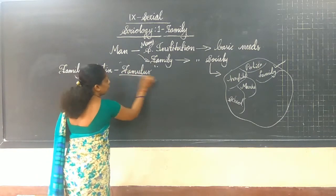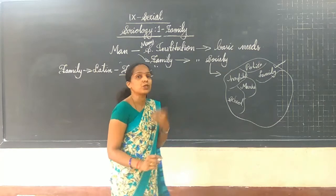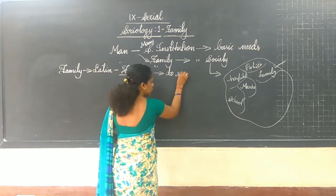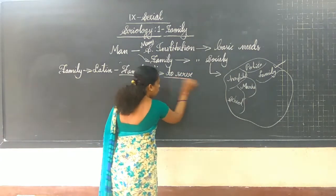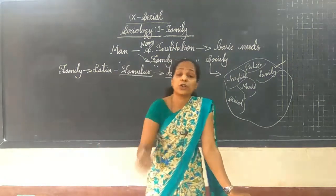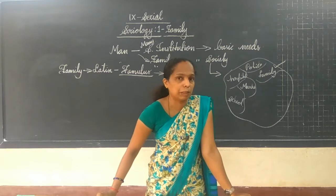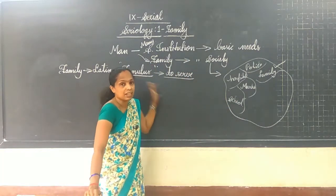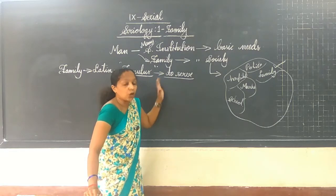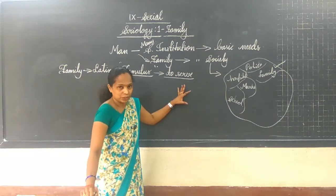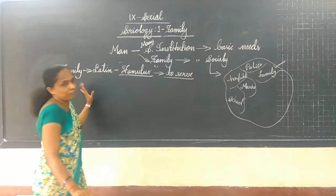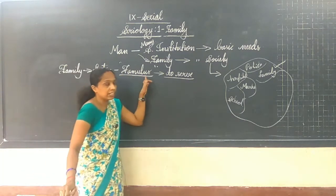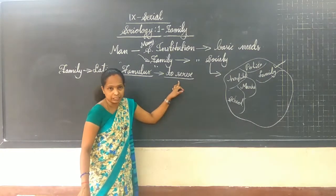What is the meaning of family? It means 'to serve.' The word was given the meaning that members will be there in order to serve people. So the word family, derived from the Latin word 'famulus,' means to serve their members. The system of relationship between parents is called a family.